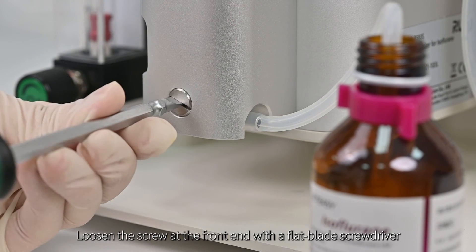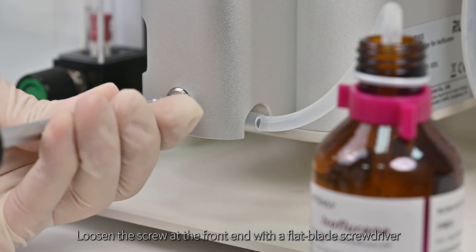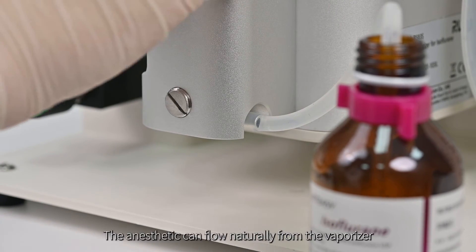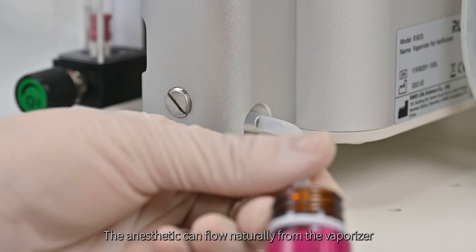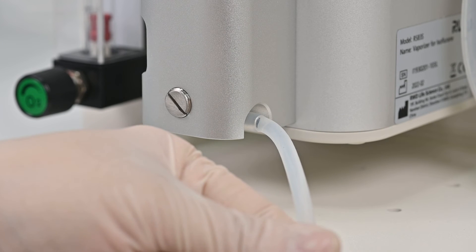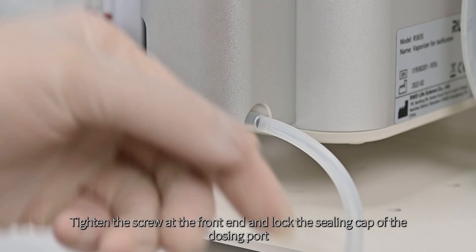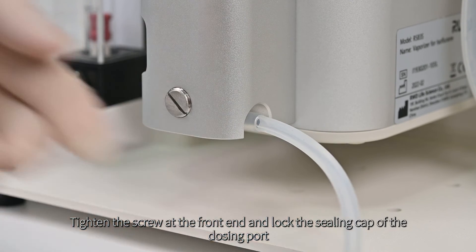Loosen the screw at the front end with a flat blade screwdriver and loosen the sealing cap of the dosing port. The anesthetic can flow naturally from the vaporizer. When no anesthetics flow out, tighten the screw at the front end and lock the sealing cap of the dosing port.